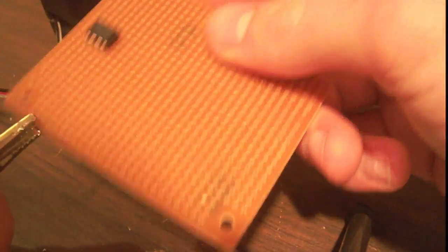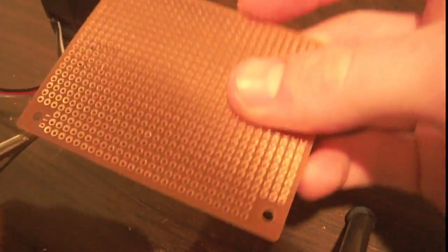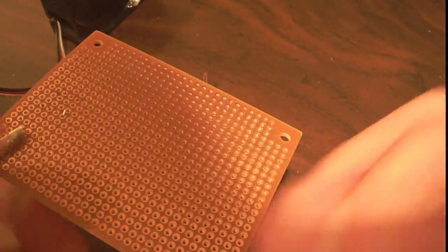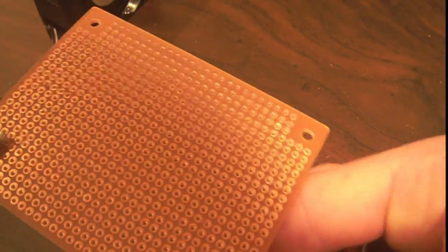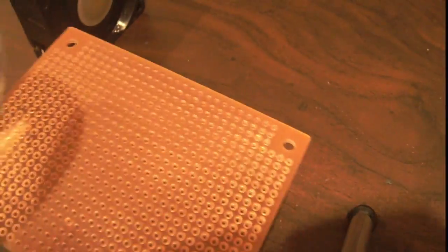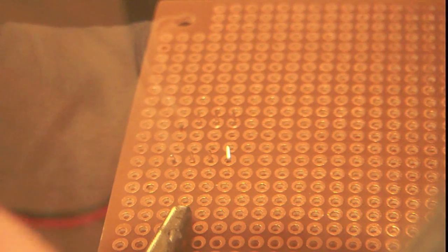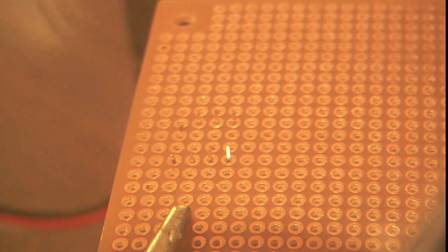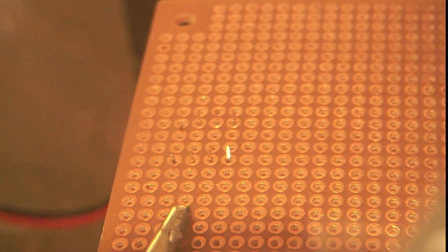Basically, whenever you're putting a component into a board, you want to bend the leads opposite. So if it's like a DIP-8 package like this, you can see those pins on the top left and the bottom right are bent inwards because they're opposite pins. That's just to hold the package in. If it's a resistor, you want to bend the leads outward.